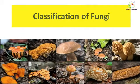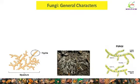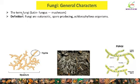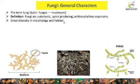Fungi is a very important group of plants and here we are going to study how fungi are classified into different groups. First of all we will study general characters of fungi. The term fungi — in plural it is called as fungi and in singular it is called as fungus — is derived from the Latin word fungus, which means mushroom. Fungi can be defined as eukaryotic spore-producing achlorophyllous organisms. Fungi show great diversity in morphology as well as habitat. Occurrence of fungi is universal.